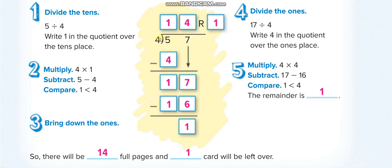4 times 1 equals 4. 4 times 2 is 8, but that is more than 5, so we can't times it by 2. 4 times 1: 4. 5 minus 4 is 1. Then we bring this 7 down. Now 4 times 4 is 16.